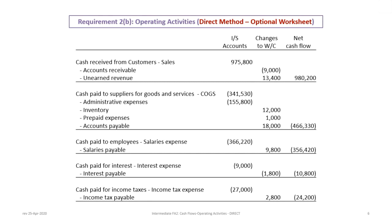Requirement 2b introduces an optional worksheet. It does exactly the same as the step-by-step preparation but provides a defined structure with three columns: the income statement account, changes to working capital, and the net cash flow that appears in the statement. For cash received from customers, sales is paired with accounts receivable and unearned revenue. Accounts receivable went up, decreasing cash flow; unearned revenue went up, increasing cash flow — net result: $980,200.